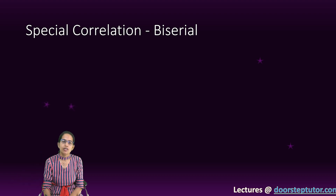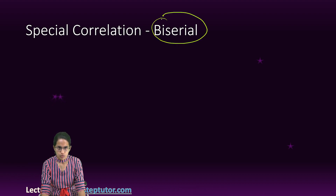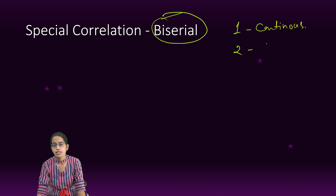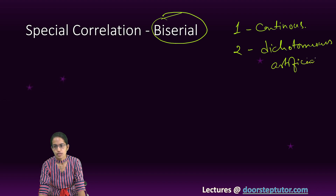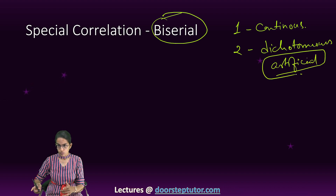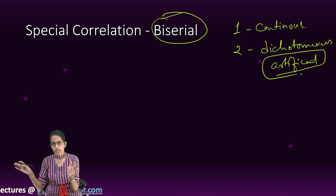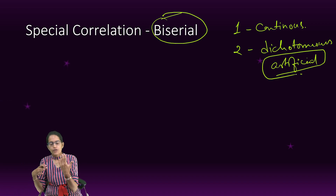To begin with, we understand the very first type, which is known as biserial correlation. Biserial correlation is a correlation where one variable is a continuous variable and the second variable is a dichotomous variable — but this is an artificial dichotomous variable. That means in the real world, there could be more than two ways in which it could be explained, but for our study, we have understood only two forms of it.